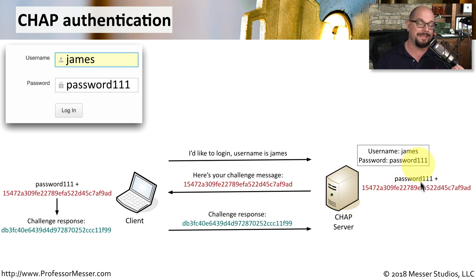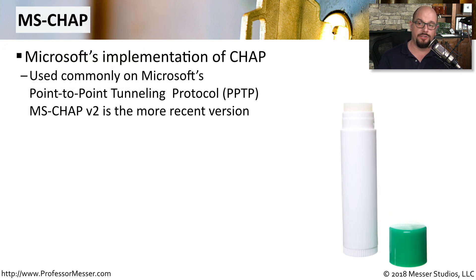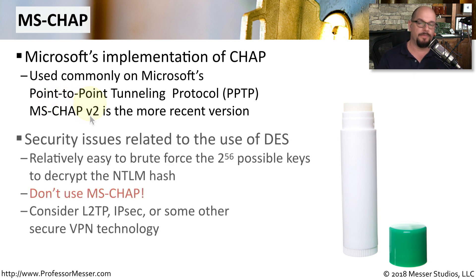The CHAP server performs exactly the same calculation on its side and determines if that hash matches. If the hash does match, then the user is allowed access to the network. Microsoft uses a customized version of CHAP that they call MSCHAP. This is something you'll see on Microsoft's Point-to-Point Tunneling Protocol, or PPTP. The most recent version of MSCHAP is referred to as MSCHAP v2. Unfortunately, MSCHAP and MSCHAP v2 suffer from vulnerabilities due to the use of the DES protocol. Instead of using MSCHAP, many people have migrated to L2TP, IPsec, or some other type of secure VPN communication.